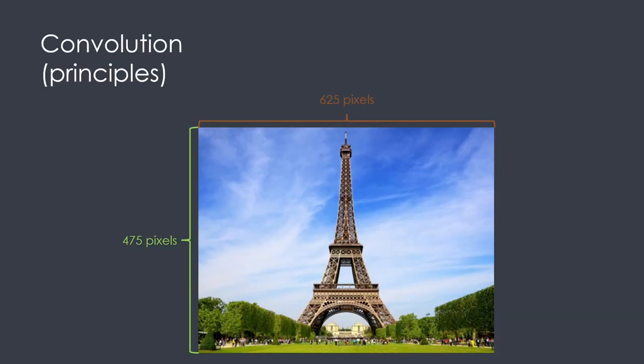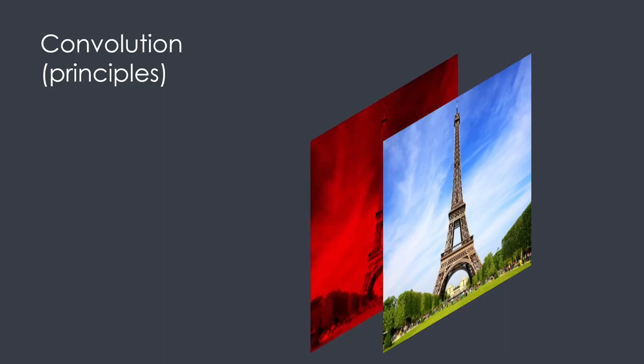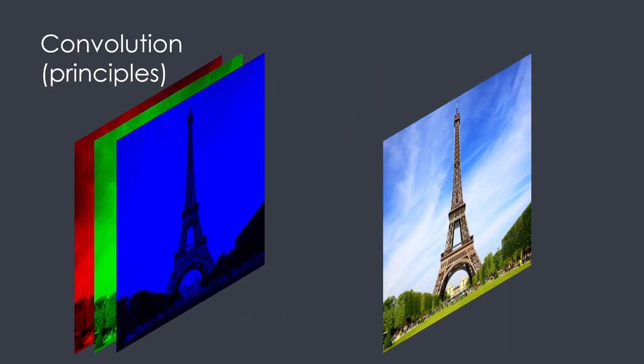What are the principles behind convolutions? Let's consider that you have here a simple image of the Eiffel Tower, 475 pixels by 625. This image is composed of three different colors that we will call channels, which are red, green, and blue — a 2D image with three channels.